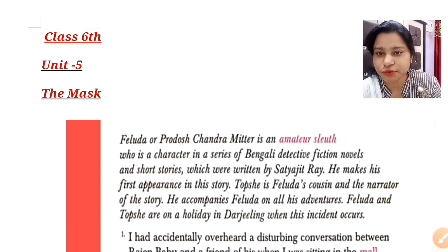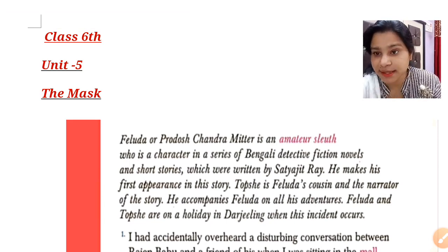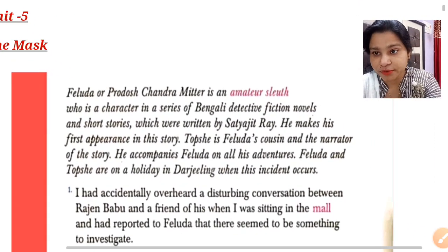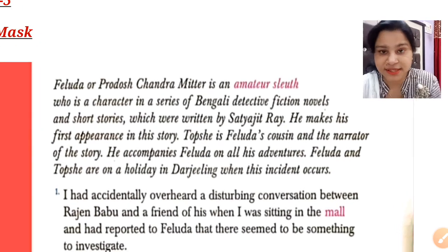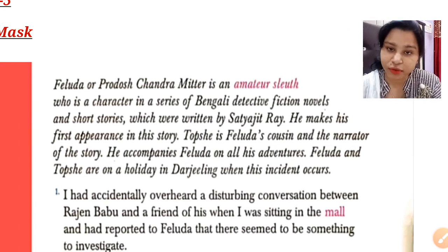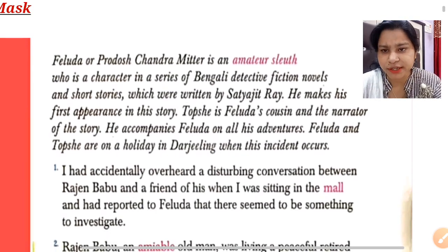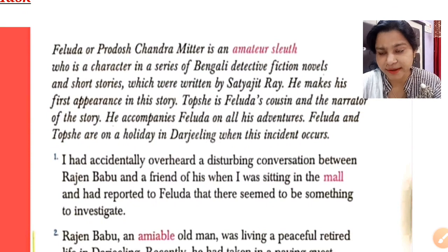Good morning and welcome, students, to online English Studio class. Today we are going to begin Chapter Number Five: 'The Mask.' Without waste of time, let us begin the class. My suggestion is that you open your book to page number 41. There are some words given in red color — these are the meanings already given in your book — so I will explain the meaning and you can find it in your book.